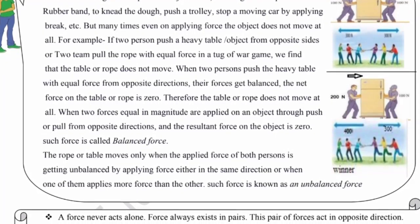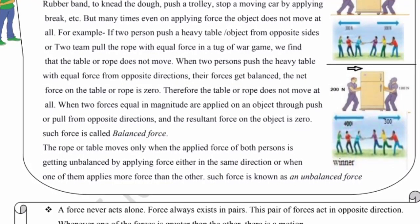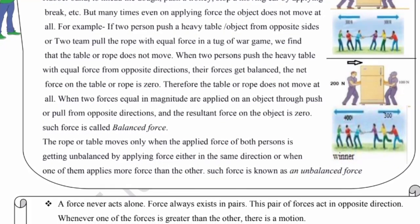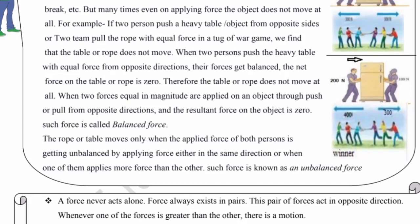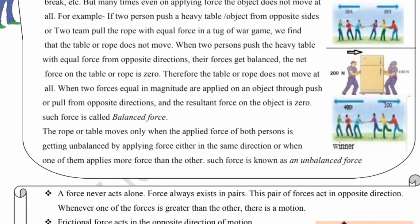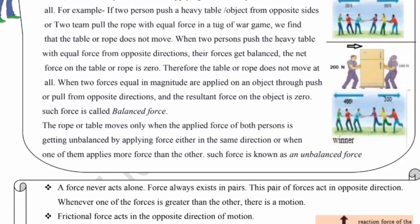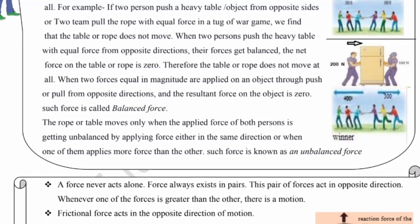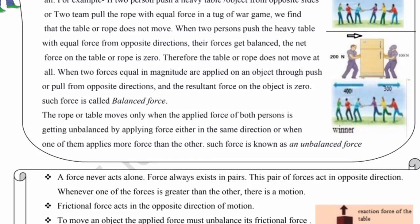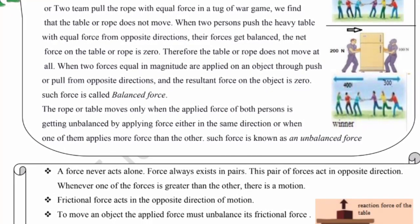Therefore the table or rope doesn't move. When two forces equal in magnitude are applied on an object from opposite directions and the resultant force is zero, such force is called balanced force. یعنی کوئی table ہے اور دو سمان سکتی والے دھکا دے رہے ہیں تو table ہلے گی نہیں — resultant بل zero ہو جاتا ہے۔ جب ایک طرف سے کم force ہوگی اور دوسری طرف زیادہ، تب ہی حرکت ہوگی۔